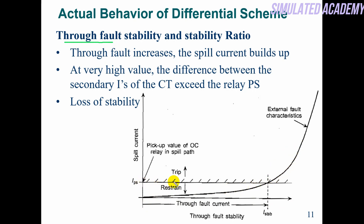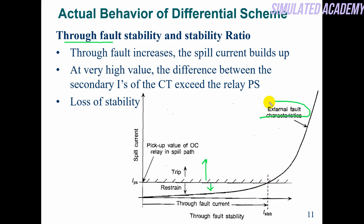As the external fault value increases, there is a minimum value called i pick-up — above which the relay must operate, and below which the relay remains in restrain. However, for an external fault, the relay should not operate. This is the CT limitation: as the through fault increases, the spill current builds up. At a very high value, the difference between the secondary currents of the CTs exceeds the relay plug setting — when the through fault current crosses the pick-up value, the relay operates for an external fault. This is called loss of stability.